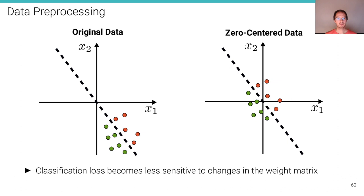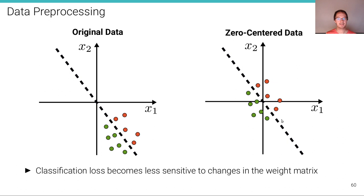Here's an intuitive explanation of why zero-centering is a good idea. We want to distinguish the red, blue, and green classes in this two-dimensional domain. If the dataset is not zero-centered and I rotate the decision boundary by five degrees, I suddenly make a very large classification mistake. But if the data is zero-centered and I change the decision boundary slightly, this does not happen as much. It's just an illustration, but it shows how you can think about it.